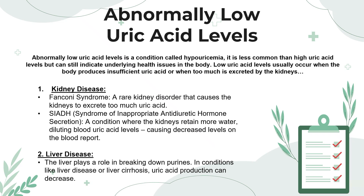Moving on, let's talk about abnormally low uric acid levels in the blood report. Abnormally low uric acid levels is a condition known as hypouricemia, and it is less common than high uric acid levels, but can still indicate an underlying health issue. Low uric acid levels usually occur when the body produces insufficient uric acid or when too much is being excreted by the kidneys.